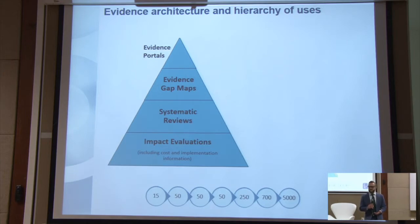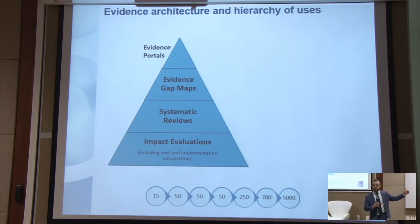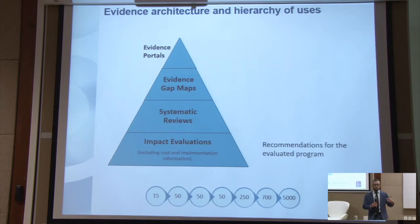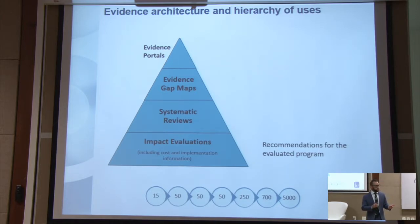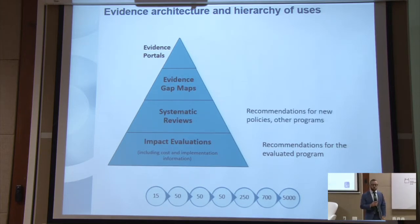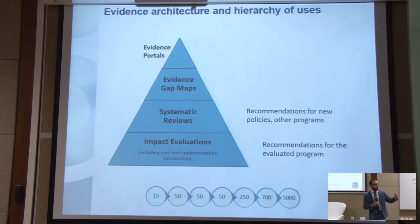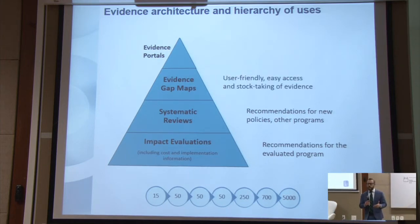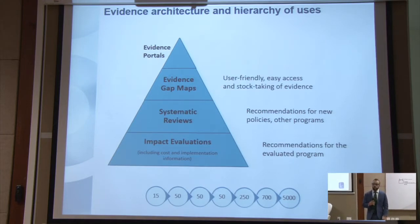This pyramid summarizes the main things that we focus on at 3IE, and each of the levels builds on the one below. We spend a fair bit of time and energy trying to do and support impact evaluations. Impact evaluations give you a sense of whether or not there was an effect for a particular program, but sometimes don't tell you about whether that type of intervention would work in a different context. So we also do systematic reviews to synthesize evidence across impact evaluations, so that we can have more confidence about whether a type of intervention will work on a broader level, informing policy and programs in other contexts.